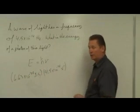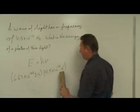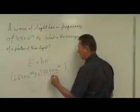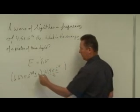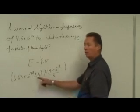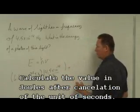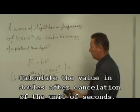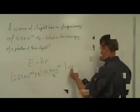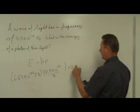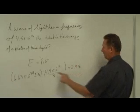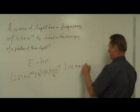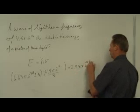If we write the frequency as s to the negative 1 and transfer it into the denominator, you can see dimensionally that the seconds cancel out, leaving us only in units of joules. Doing the calculation — 6.63 times 4.5 — keeping 2 significant figures, we get approximately 3.0 times 10 to the minus 47 joules.